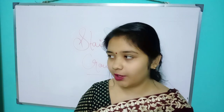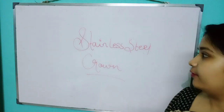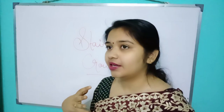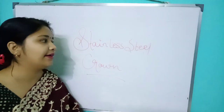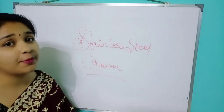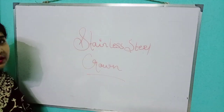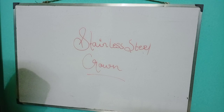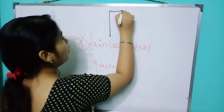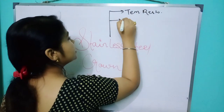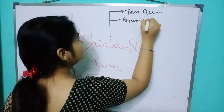As I promised, I will now be covering the stainless steel crown — what it is and why we cannot give it in adults. This is a very important topic. The stainless steel crown is given in three situations: temporary restoration, bruxism, and single tooth crossbite.